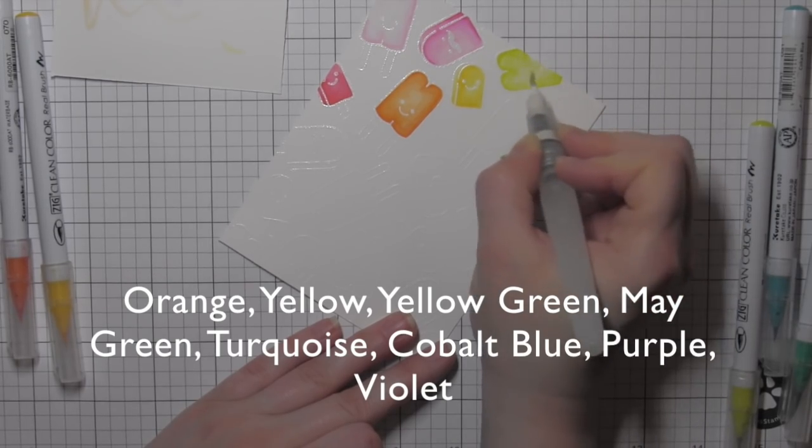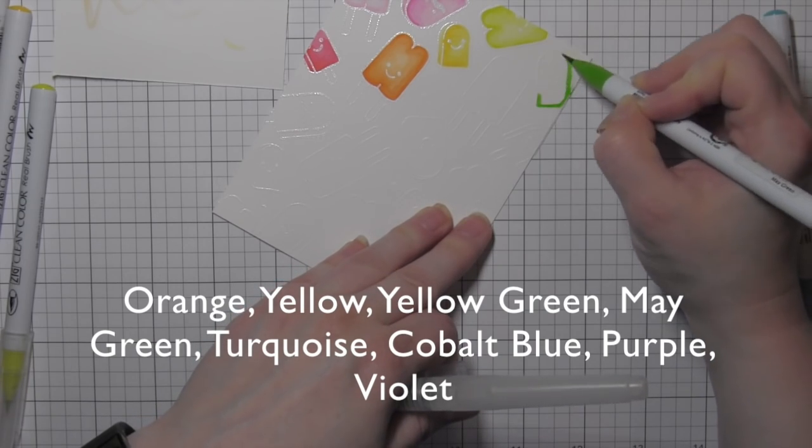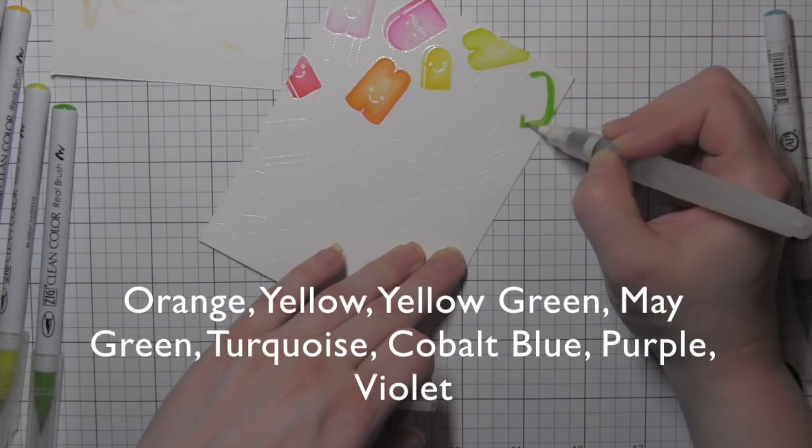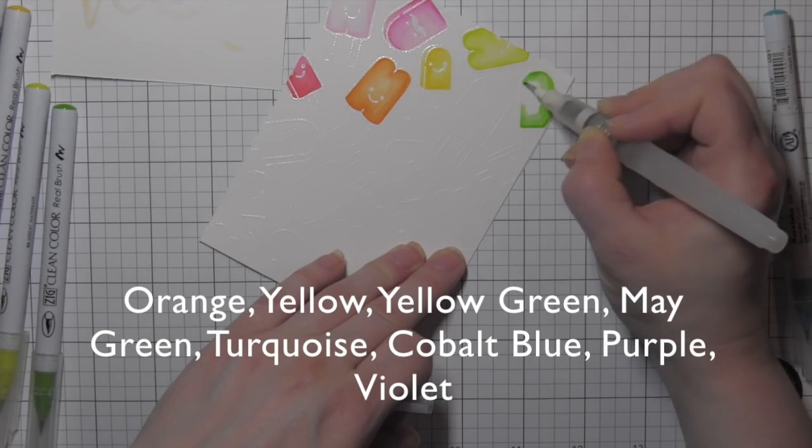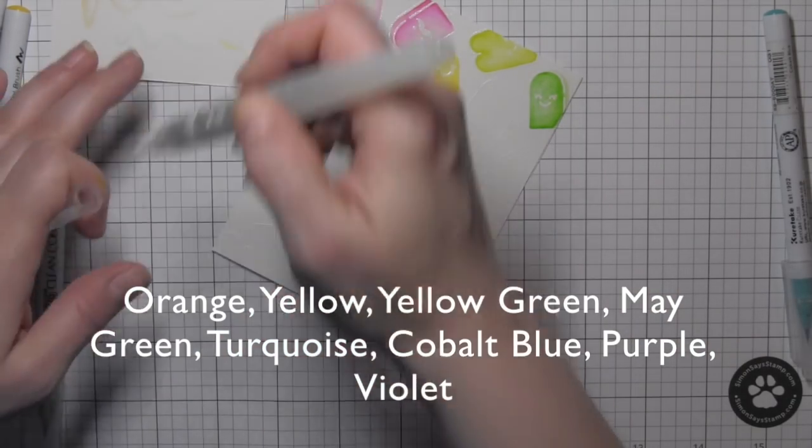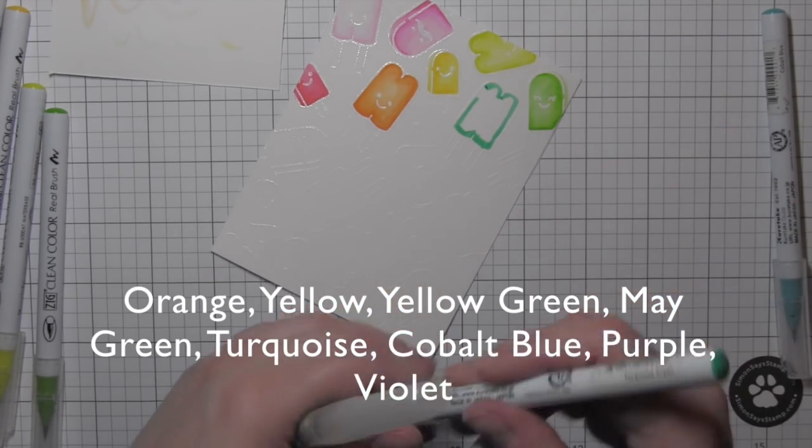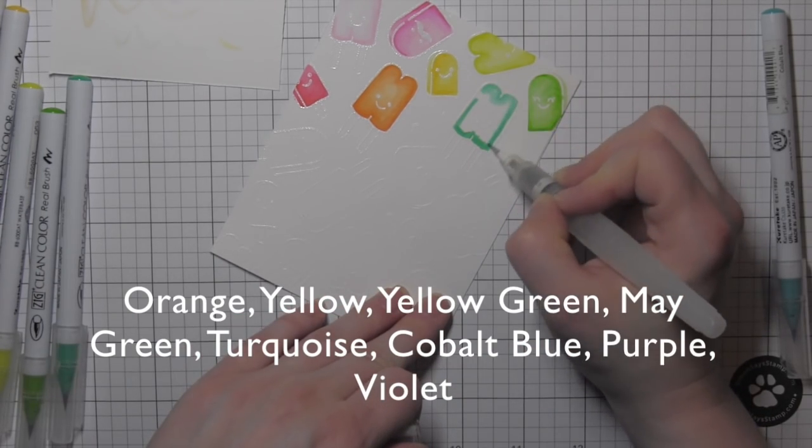And I'm just going to continue to color all of these in. I started in that upper left corner and started with light pink, and then I'm moving through a darker pink, red, orange.